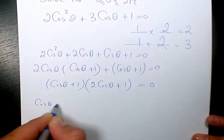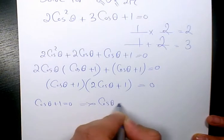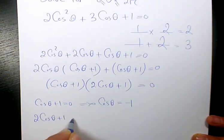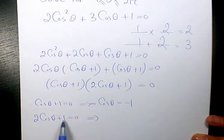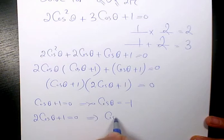Cosine theta plus 1 is 0. It means that cosine theta is negative 1. Here, 2 cosine theta plus 1 is 0. It means that, when you move it here, it becomes negative 1. Divided by 2 is going to be negative half.